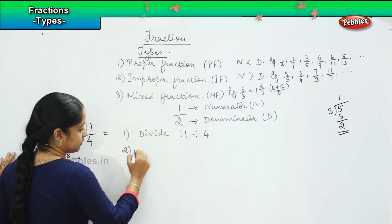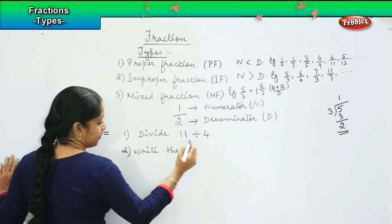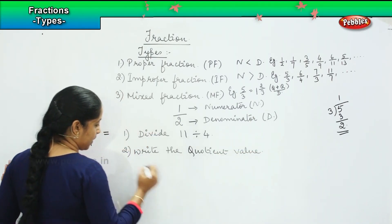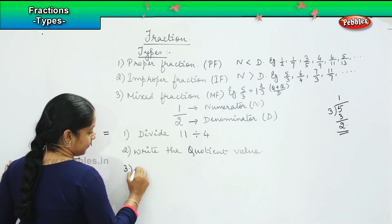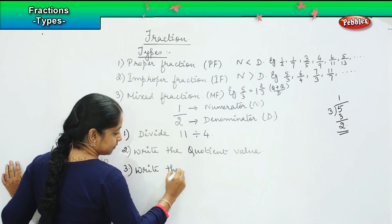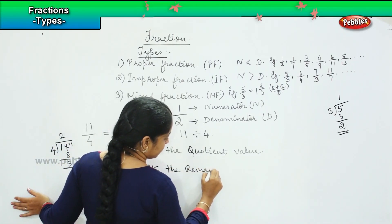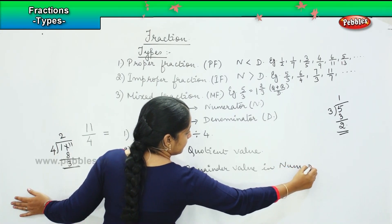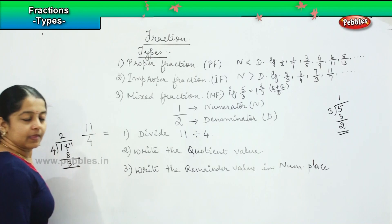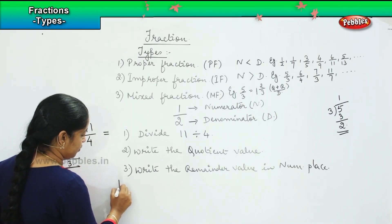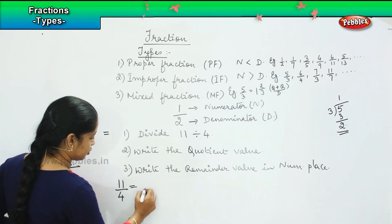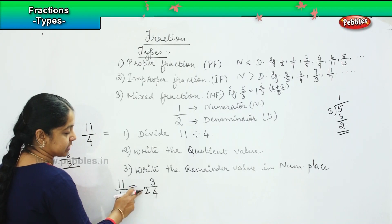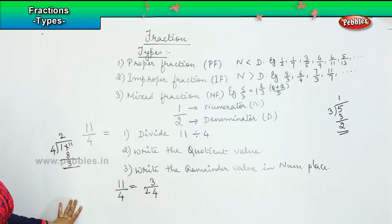The second one is write the quotient value. And the next step is write the remainder value in numerator place. So what did I do here? This 11 by 4, I have written this as 2, 3 by 4. So what will I do? 2 into 4 into 2 is 8, 8 plus 3 is 11. Is it clear, children?